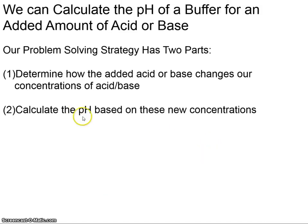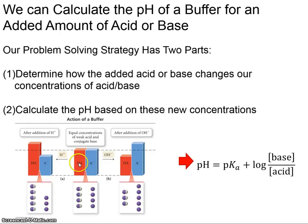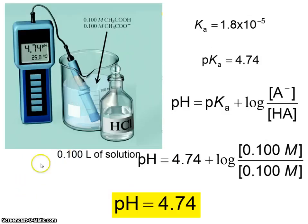The next step: once you've determined the changes in concentrations, calculate the new pH based on the new values using Henderson-Hasselbalch. For example, with 0.1 molar acetic acid and acetate, Ka is 1.75×10⁻⁵, so pKa is 4.74. Henderson-Hasselbalch gives pH equals 4.74 plus log(0.1/0.1), which equals 0, so pH is 4.74.